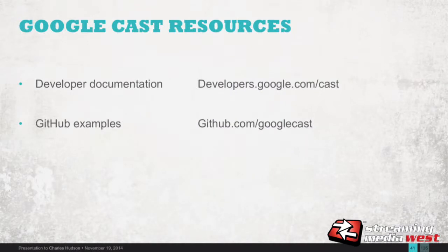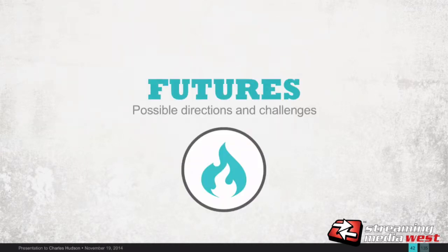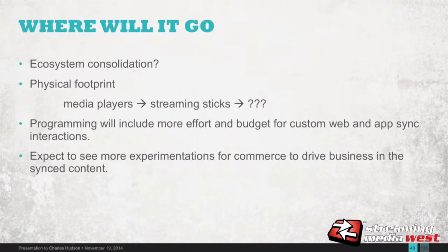Some additional resources: developers.google.com/cast, and Google Cast on GitHub with lots of examples including a simple hello world, multiple device communication to one receiver, and a custom receiver app. Now let's talk about futures — some possible directions and new things that have happened in the space just in the last six months. The ecosystem, we believe, will continue to consolidate. Right now we have media players in mobile devices, sticks, and TVs — most likely that will start consolidating. We see it in receivers as well: Blu-ray players, smart players, a whole wide range of physical footprint. The physical form factor is still up for debate.